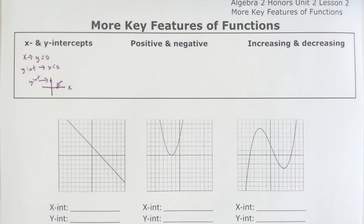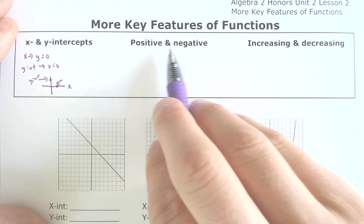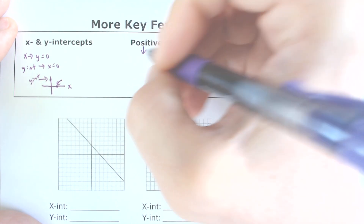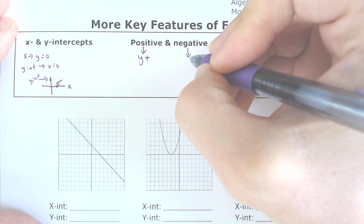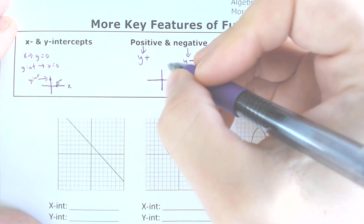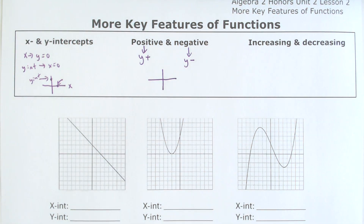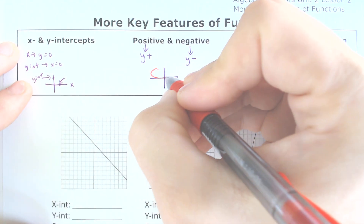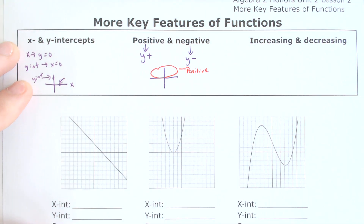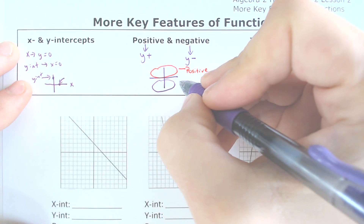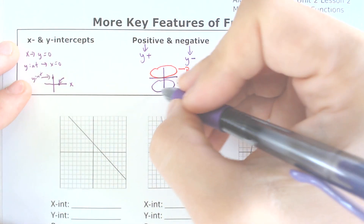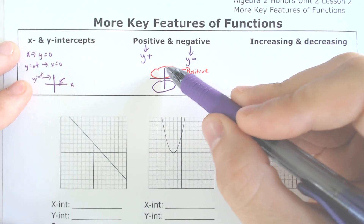When the graph is positive and negative: it is positive when y is positive, and it is negative when y is negative. I like to think of it as when are you above the water — everything above the water is positive. Anything below the water or below the ground is negative. Anytime the graph is down here, negative; anytime the graph is up top, positive.